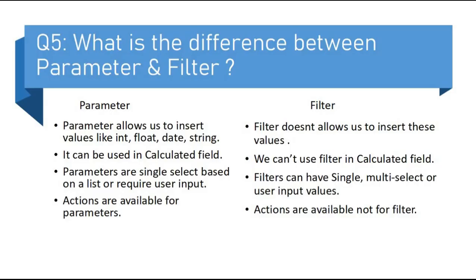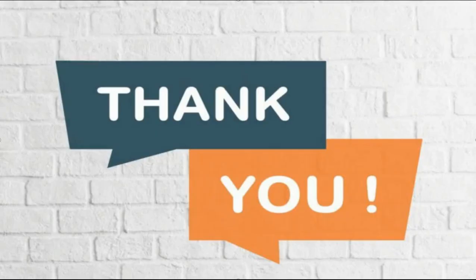The next question is: what is the difference between Parameter and Filter? Parameter allows us to insert values like int, float, date, string, boolean, etc., but in a filter we cannot use these value types. Parameter can be used in a calculated field, but we cannot use a filter in a calculated field. Parameters are single-select based on a list or require user input, but a filter can have single, multi-select, or user input values. Actions are available for parameters but actions are not available for filters.